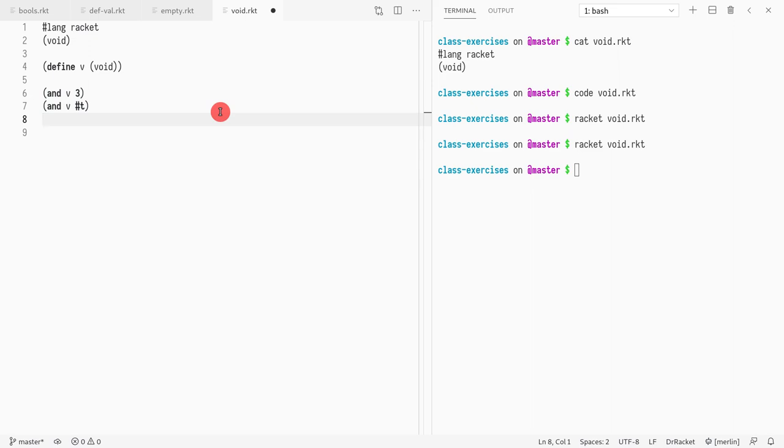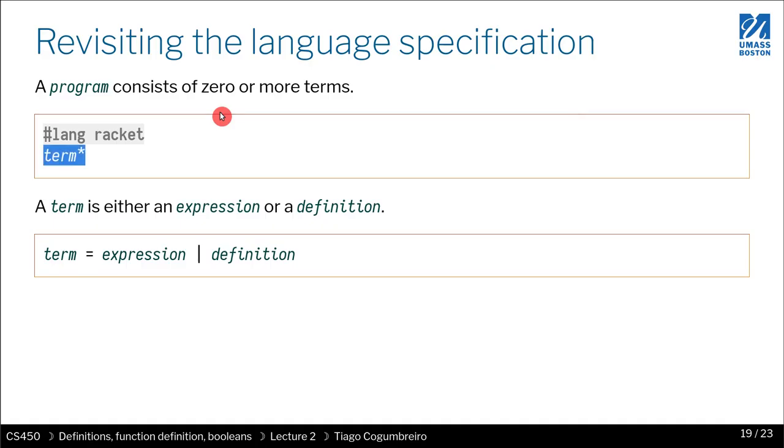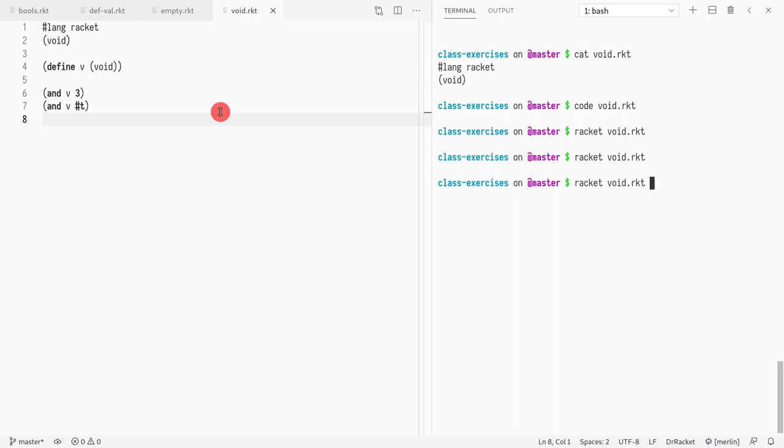But what is V? V is void. I said void is nothing. So is nothing true or false? It must be something because everything is a value. Nothing is something, which is an interesting thing to say. So it is true.